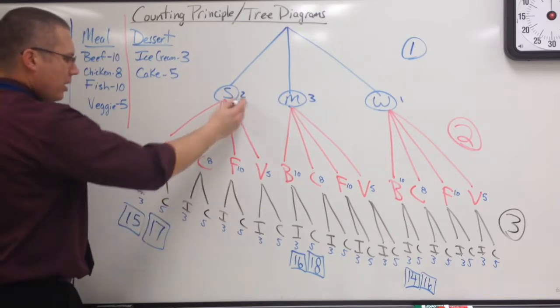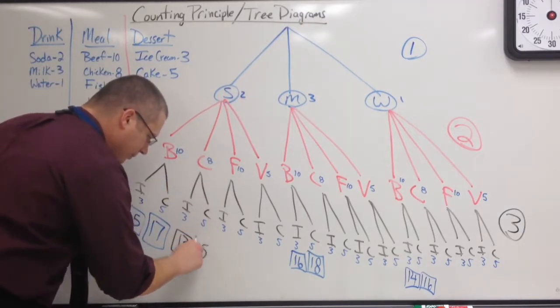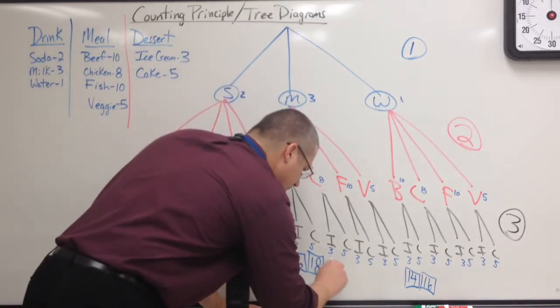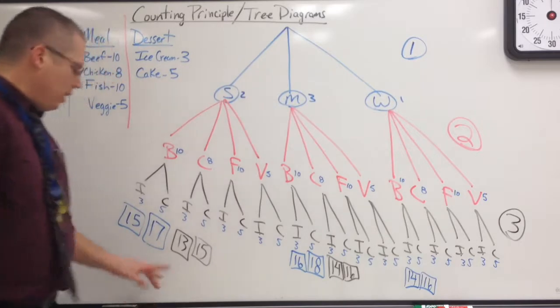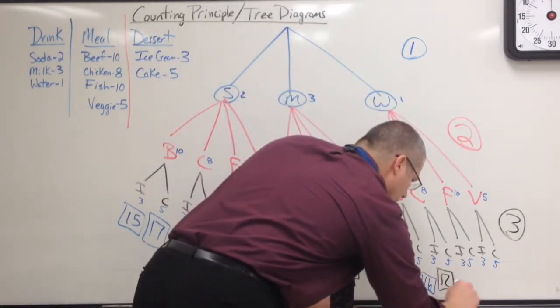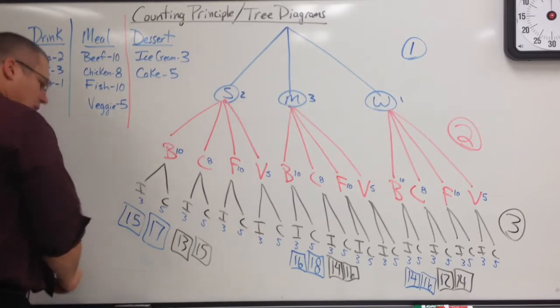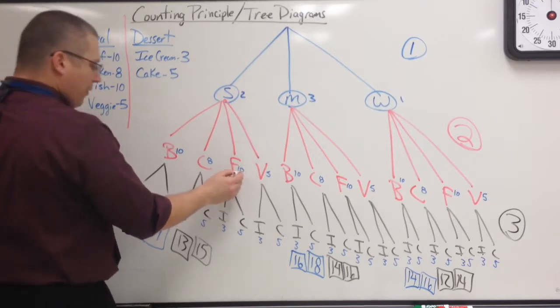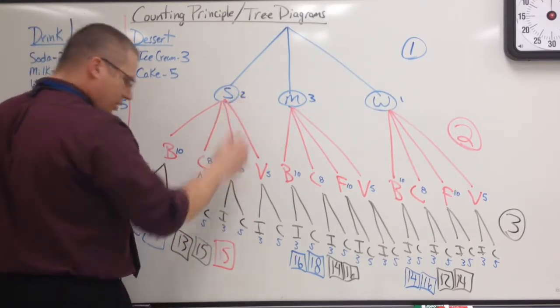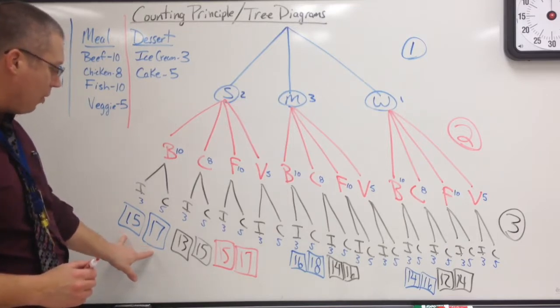We just did beef. We did drink, beef, ice cream. Drink, beef, cake. That was 15 and 17. Now if the other beef is going to be the same cost, the only difference is the drink cost was different. The drink is $1 more than this. So if this was 15 and 17, the $2 drink, this is going to be 15 and 17, but it's going to be plus 1 each time because the drink was $1 more. So instead of 15 and 17, I'm going to write 16 and 18.